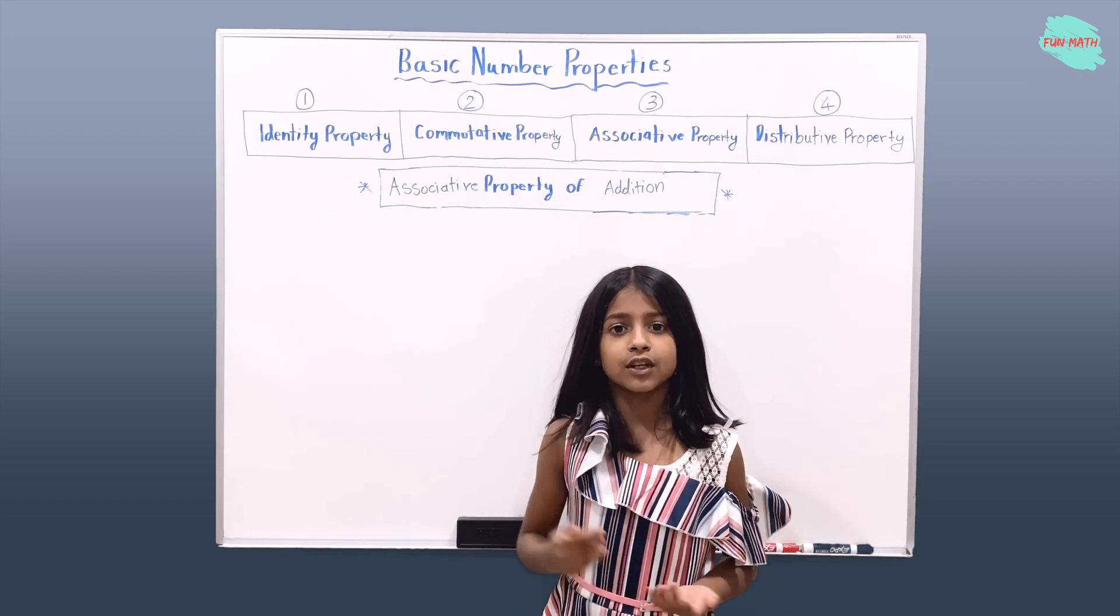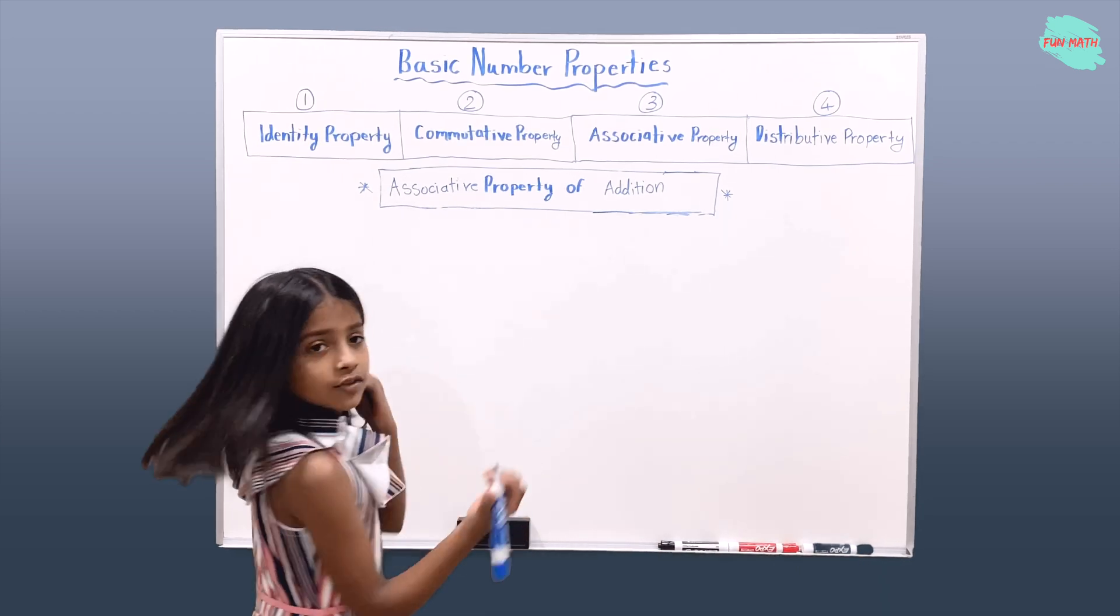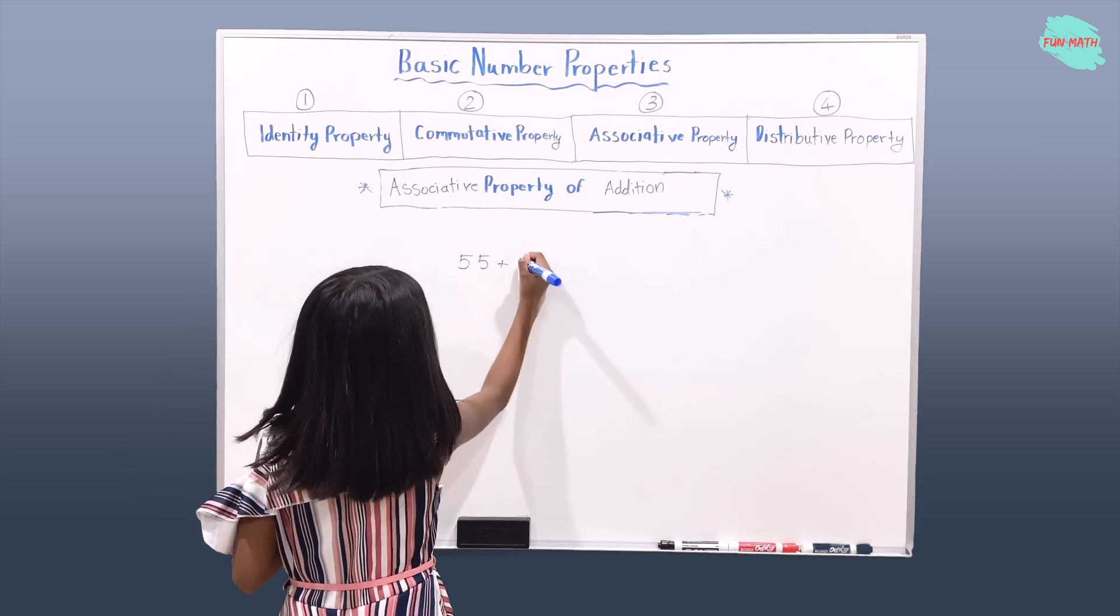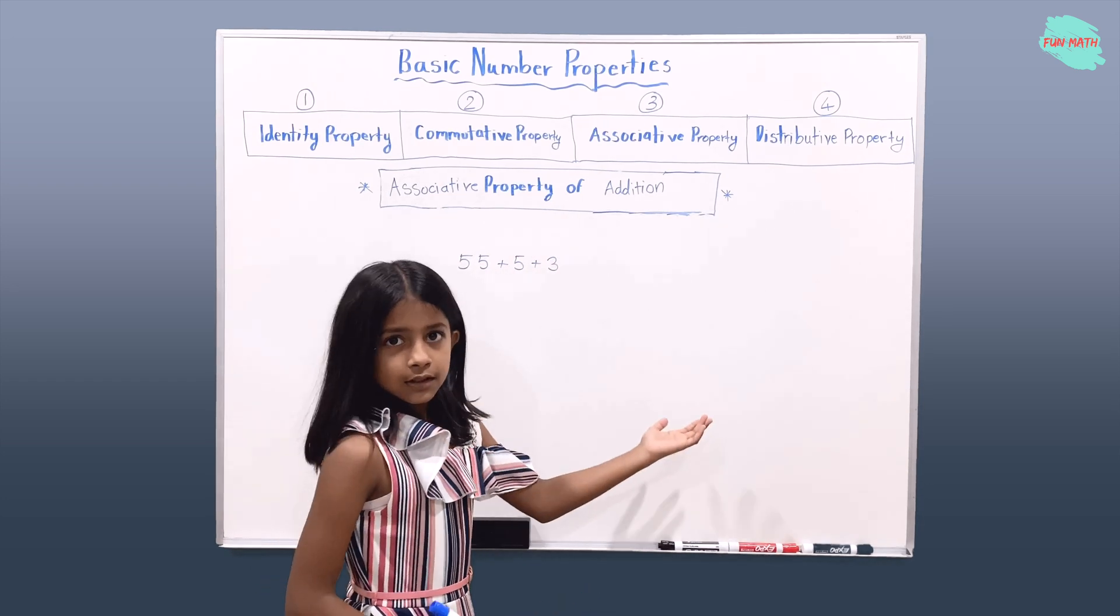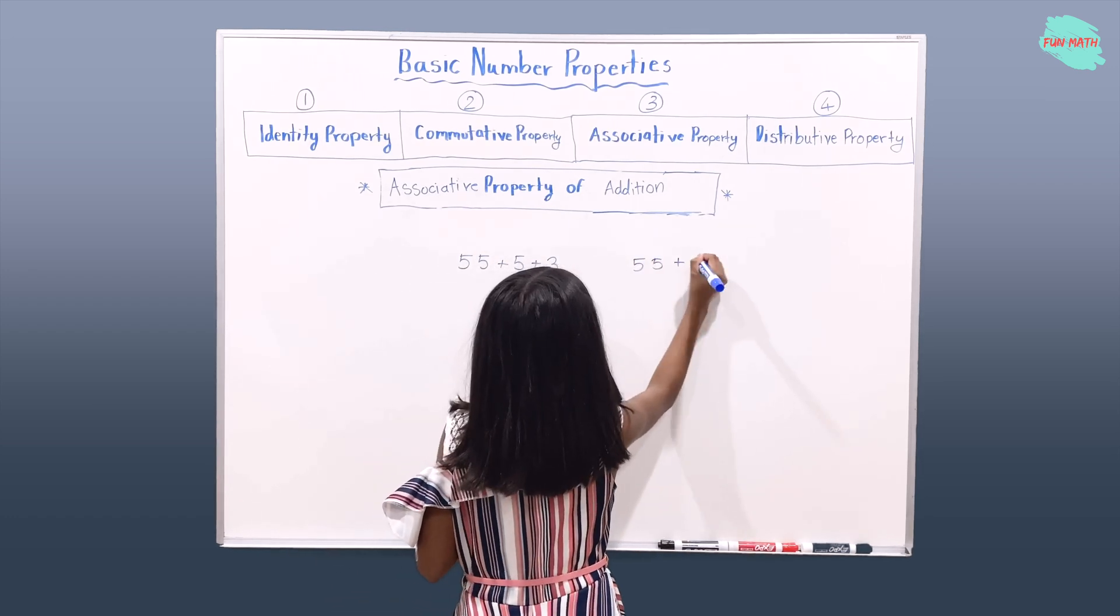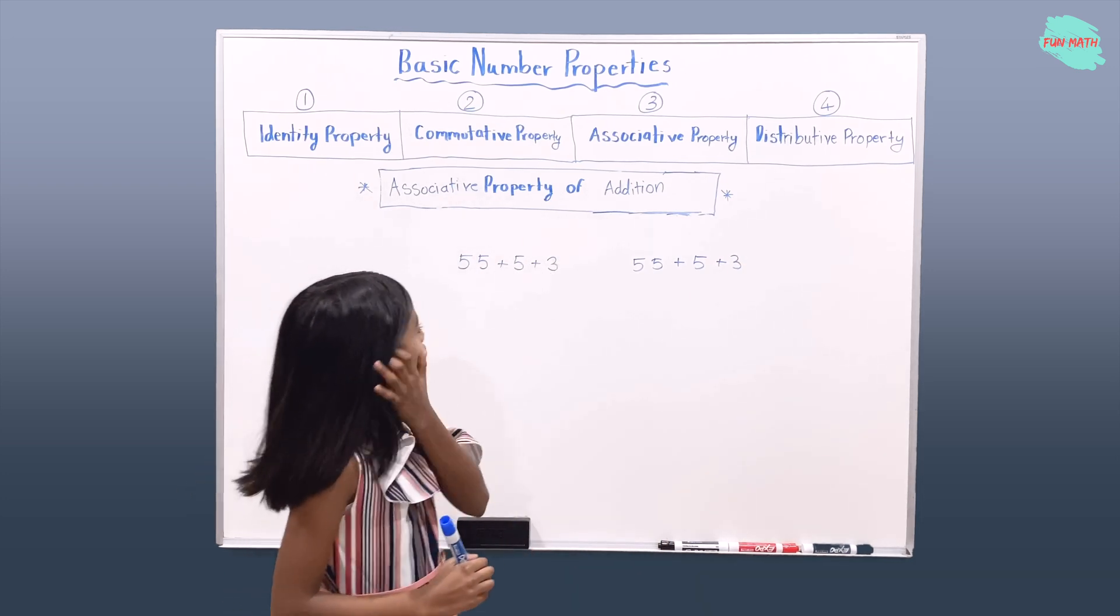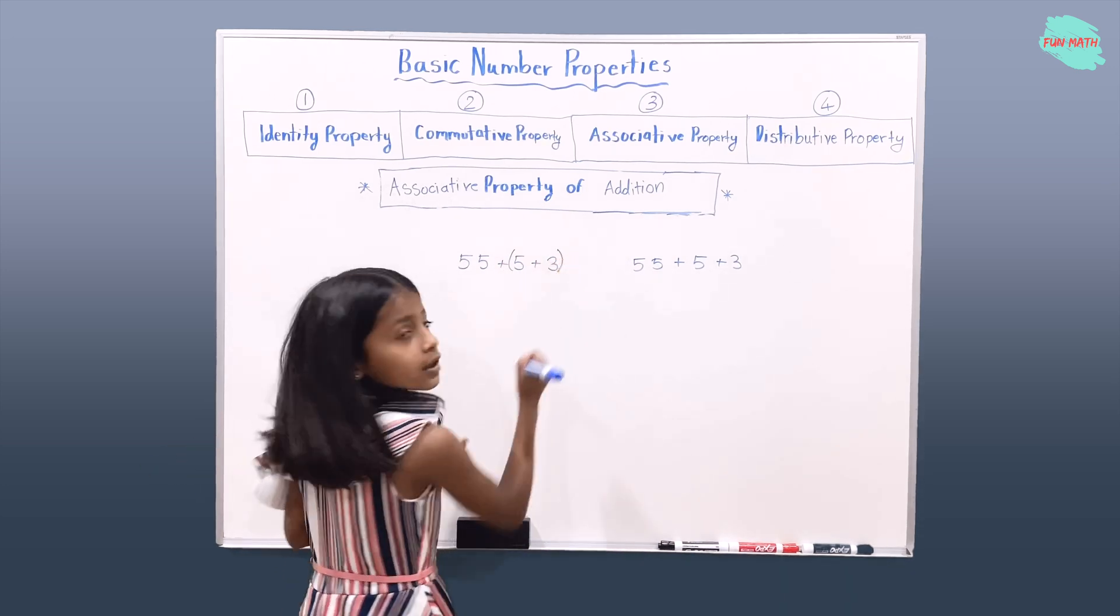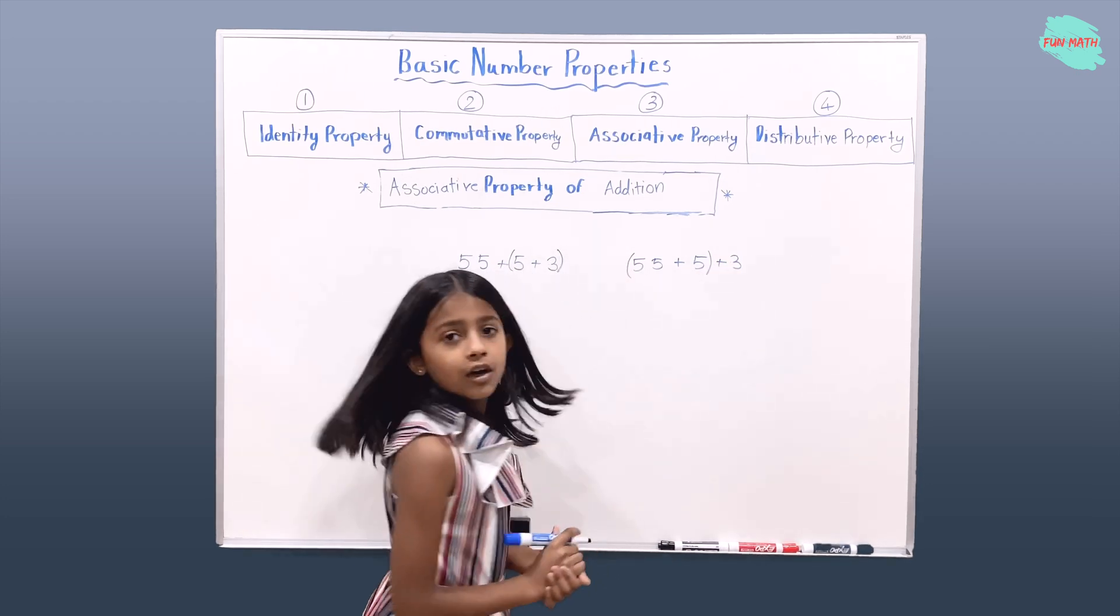Let's take an example for the associative property of addition. Let's take 55 plus 5 plus 3. I'm going to rewrite this problem here. 55 plus 5 plus 3. So here the associatives are going to be 5 and 3. Here the associatives are going to be 55 and 5.